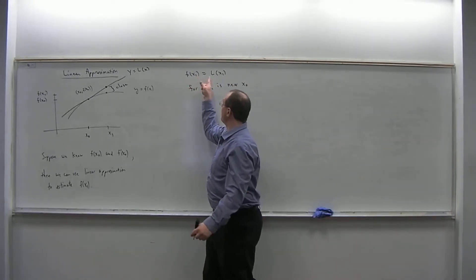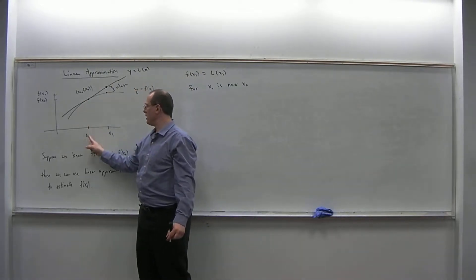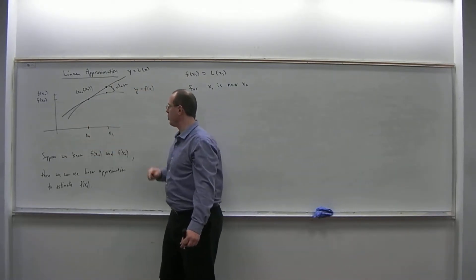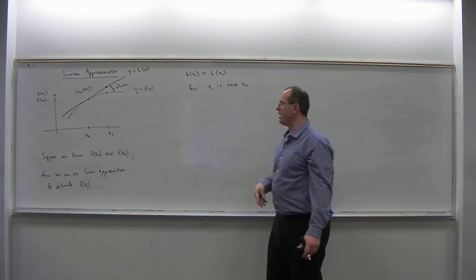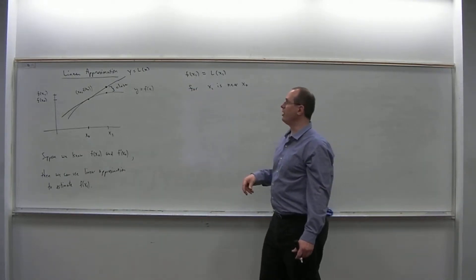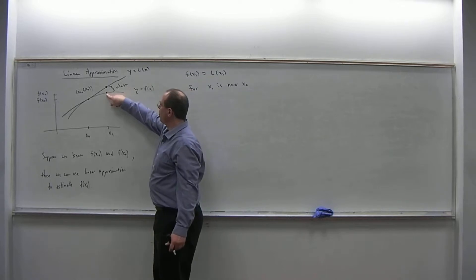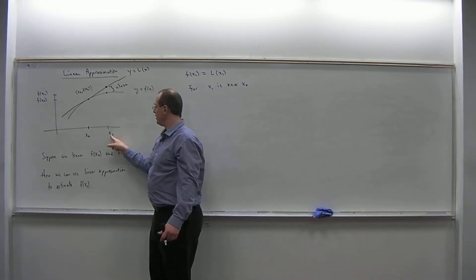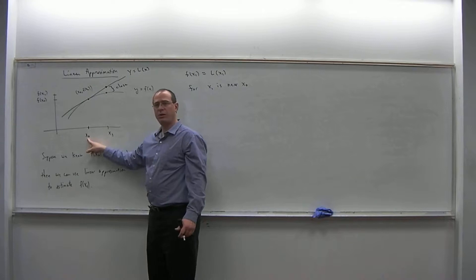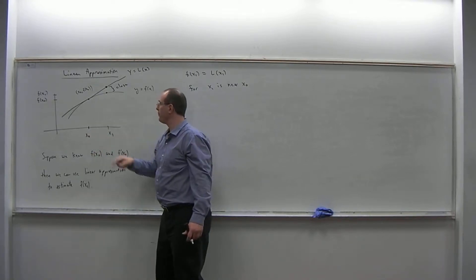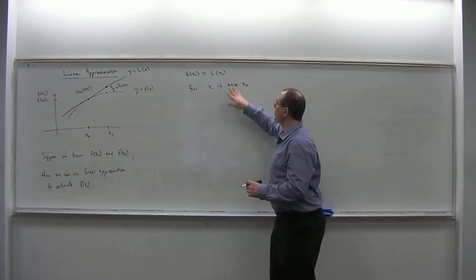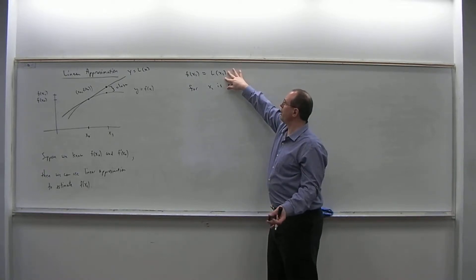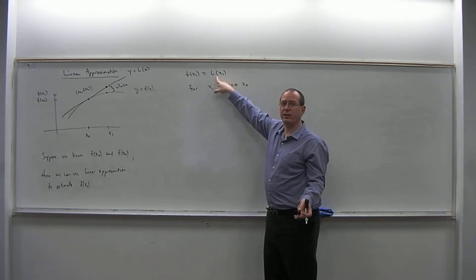The tangent line L of x is the tangent line at point x0 comma f of x0, and x1 is some x value near x0. The function at x1 and the line at x1 should be close if x1 is near the point of tangency x0. This is the idea of linear approximation, and it's called linear approximation because L is a linear function.